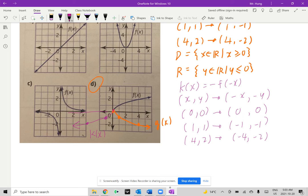What do you notice? Let's write down the domain. x is going to be an element of real numbers such that x must be less than or equal to 0. What about the range? y is an element of real numbers such that y must be less than or equal to 0.